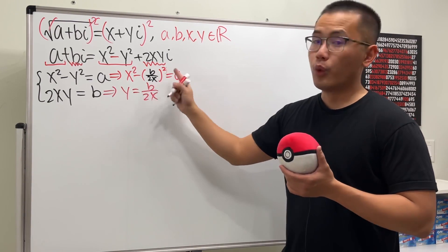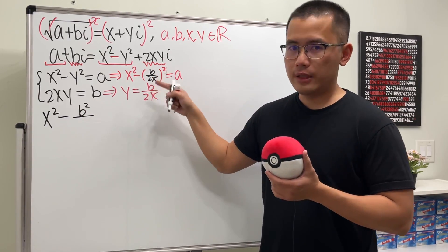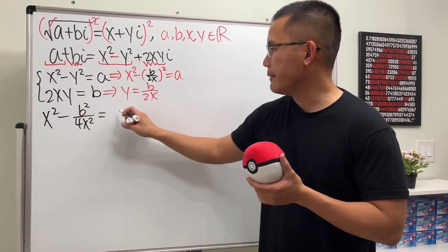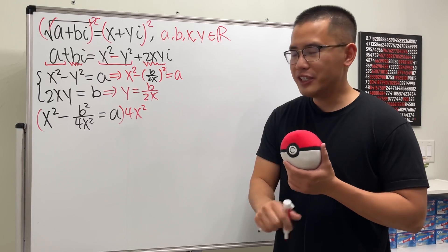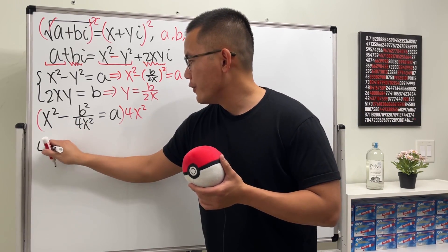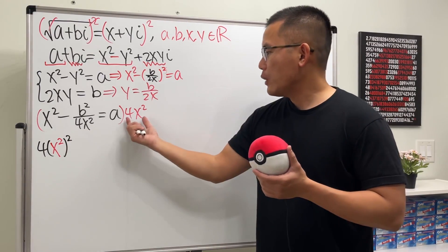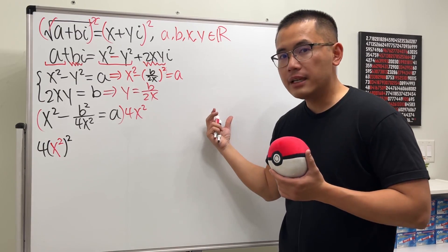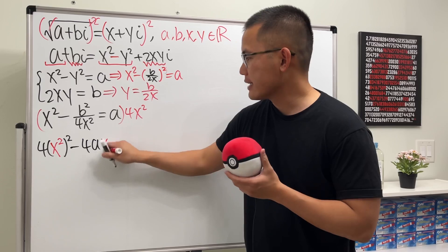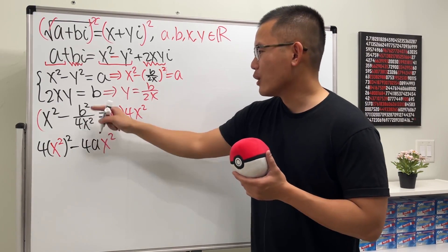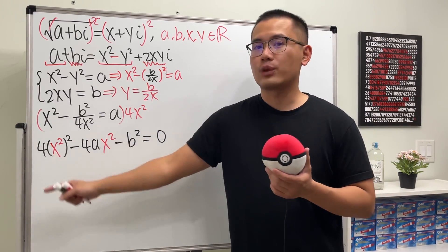Squaring gives x² - b² / (4x²) = a. Multiply everything by 4x² to clear fractions: 4x⁴ - 4ax² - b² = 0. Written in terms of x², this is a quadratic equation, so we can apply the quadratic formula.